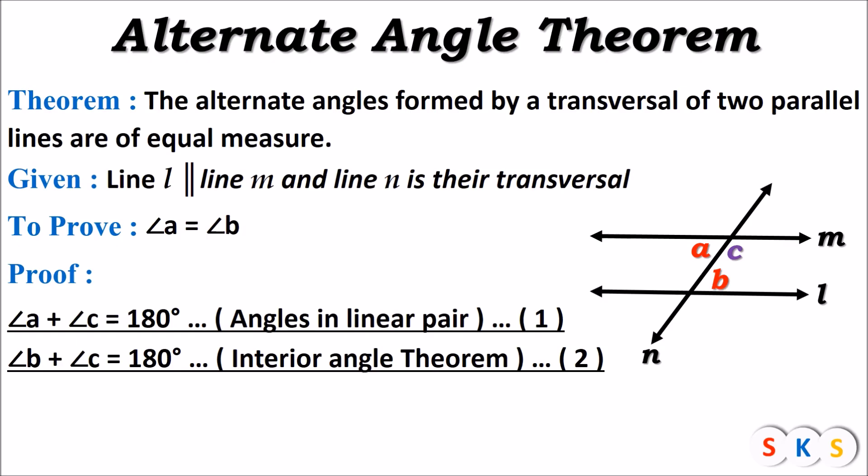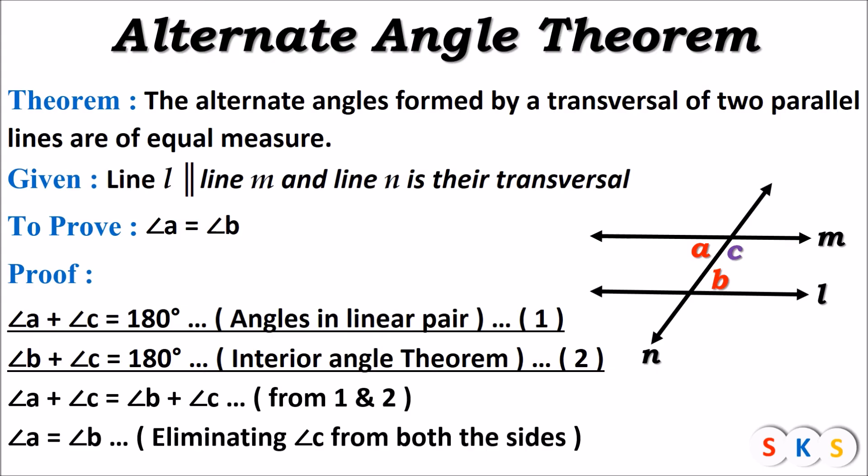We have two equations. The right-hand sides are equal, therefore: angle A plus angle C equals angle B plus angle C. This we got from equations one and two. Both sides have the common angle C, so we eliminate angle C from both sides. We get angle A equals angle B. Hence, we can say that the alternate angles formed by a transversal of two parallel lines are of equal measures.